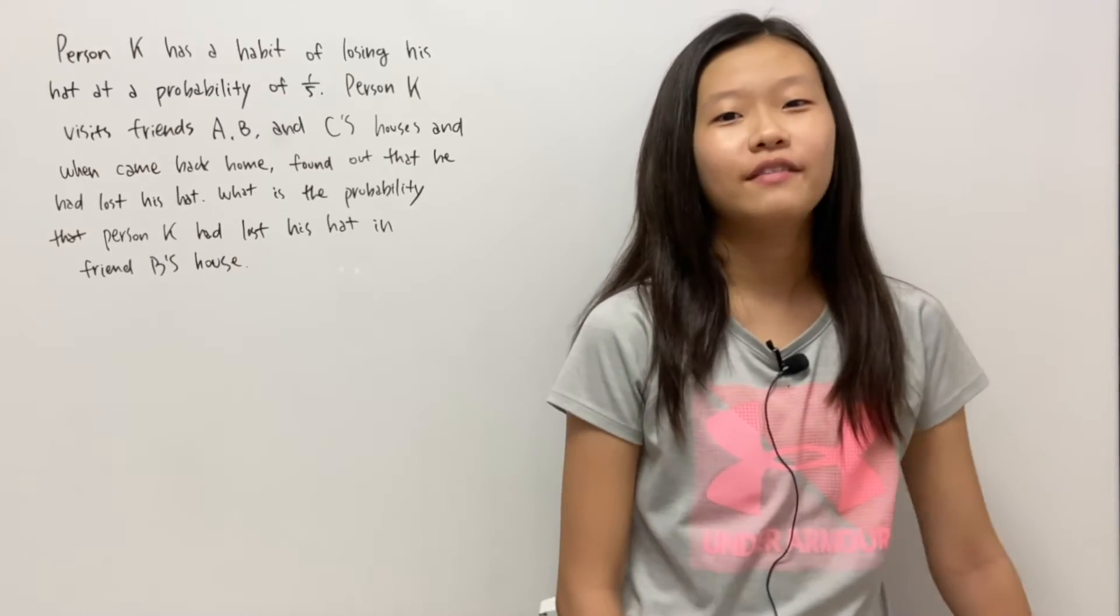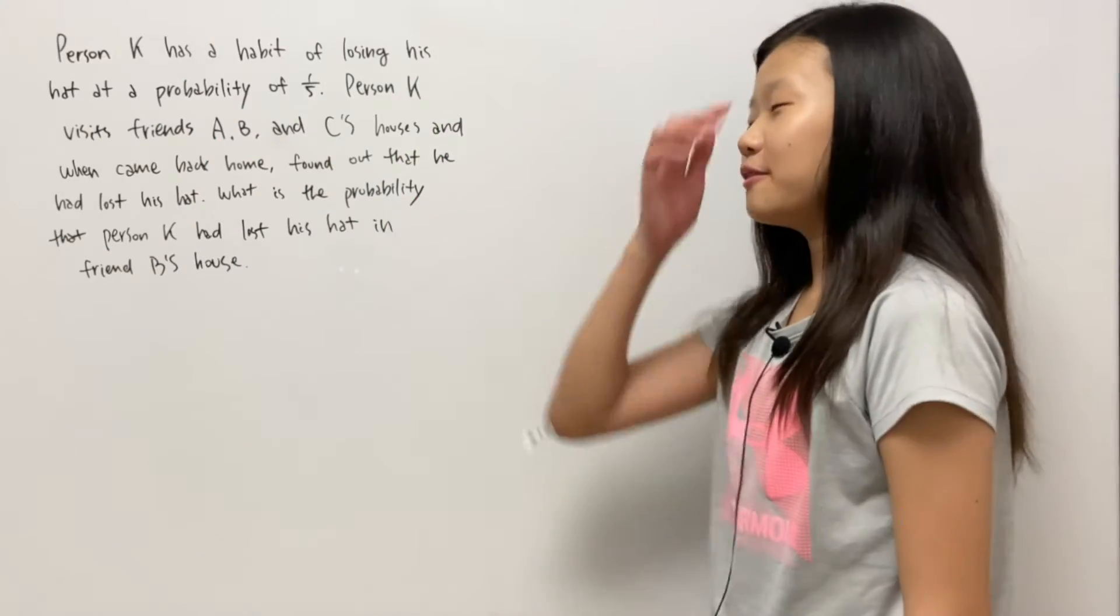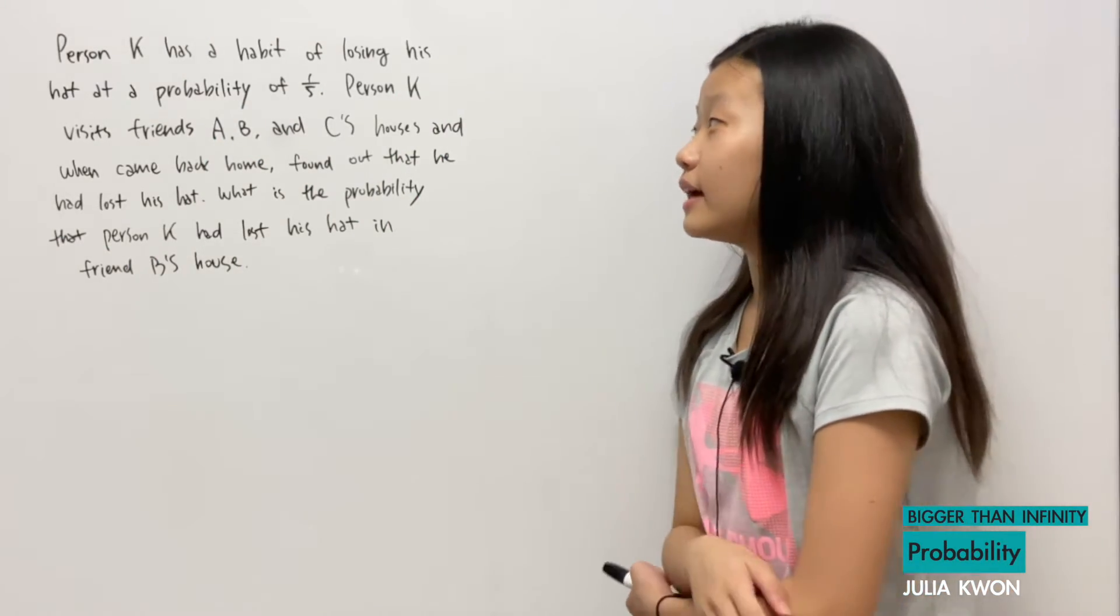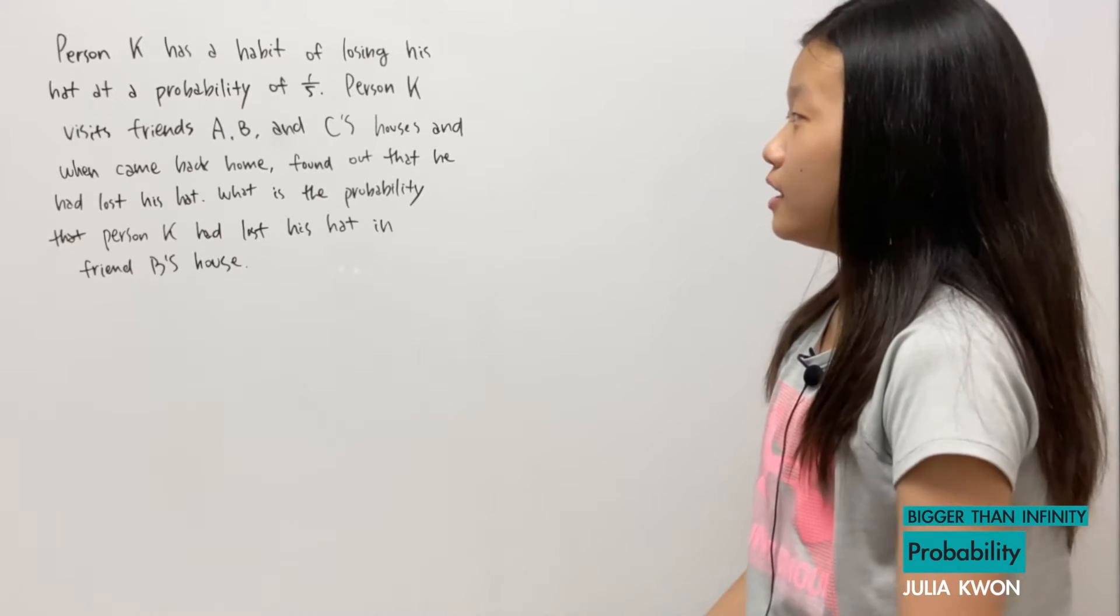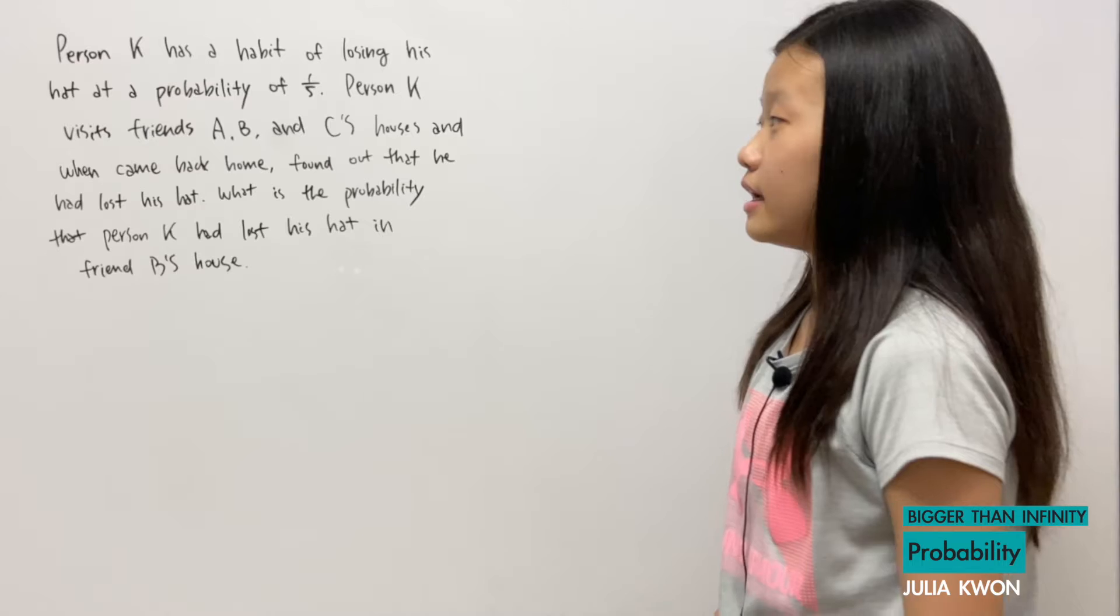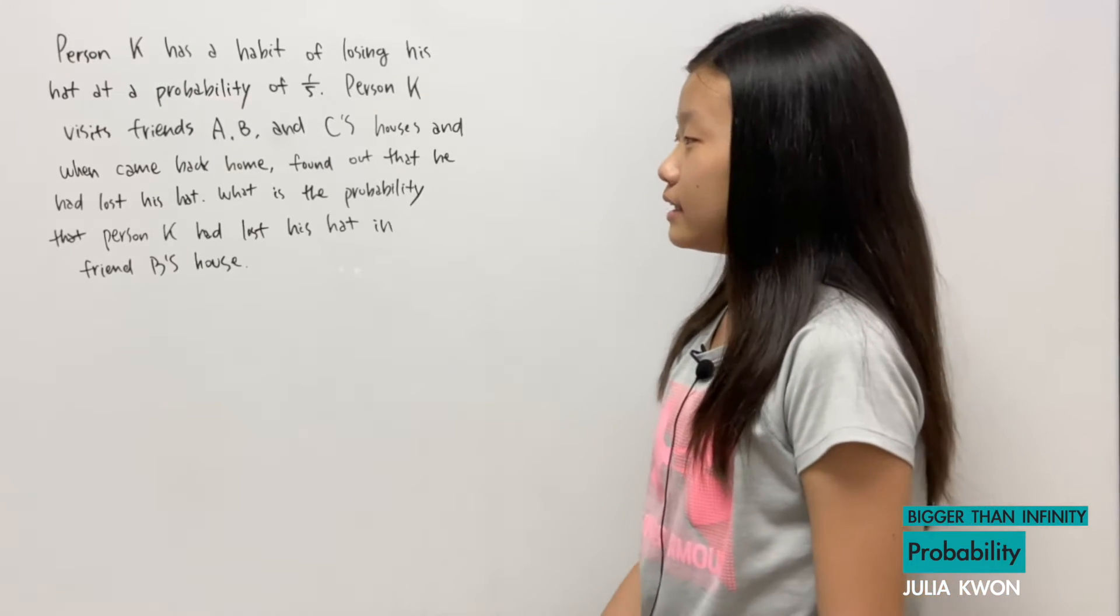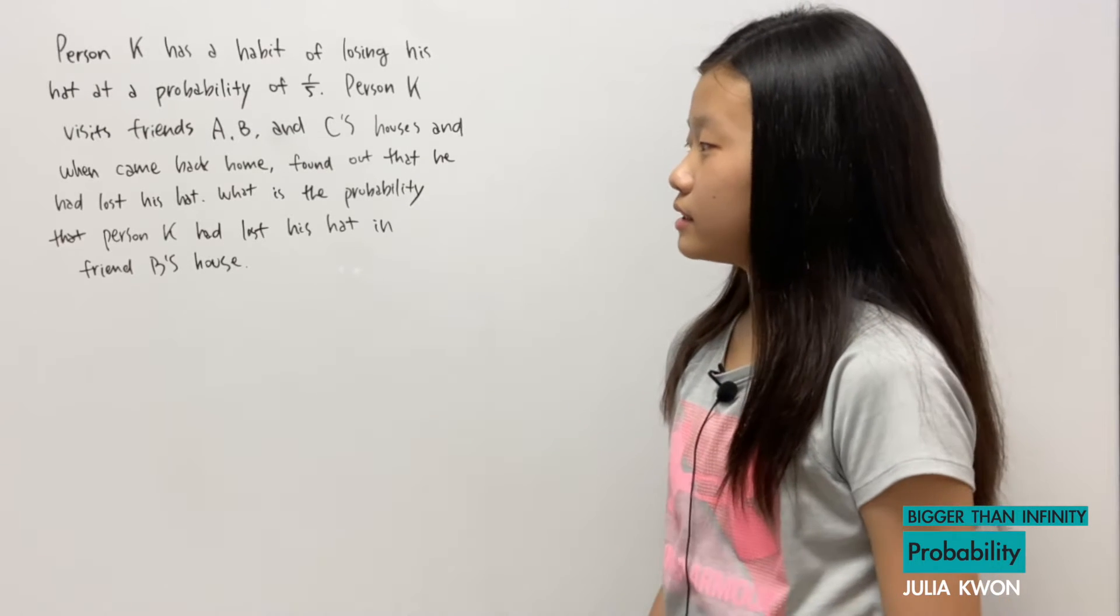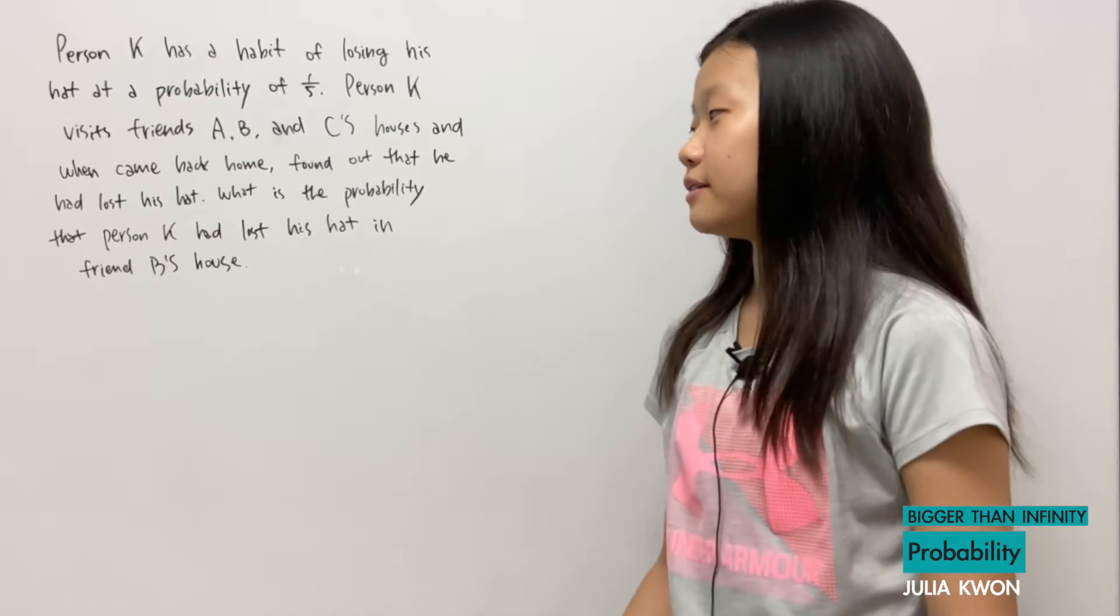Hello everyone! In this video, I have a probability problem for you guys, and I wrote it down here. It says, person K has a habit of losing his hat at a probability of 1/5. Person K visits friends A, B, and C's houses, and when he came back home, he found out that he had lost his hat in one of the houses. What is the probability that person K had lost his hat in friend B's house?